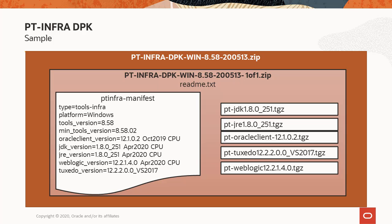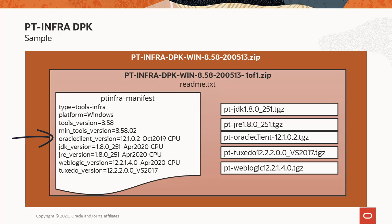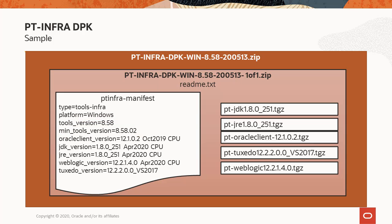For example, this is the manifest for the Windows version of the DPK. It includes JDK NGRE 1.8.0-251 April 2020 CPU, Oracle WebLogic 12.2.1.4 April 2020 CPU, Oracle Database Client 12.2.1 October 2019 CPU, and Oracle Tuxedo 12.2.2.0 VS 2017. Also notice that the manifest specifies a minimum PeopleTools version that the PT-Infra-DPK can be used with, which in this example is 858.02. You will use the manifest file to determine the software versions included.